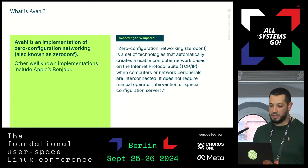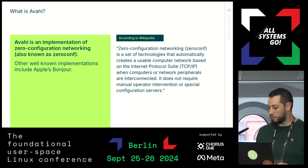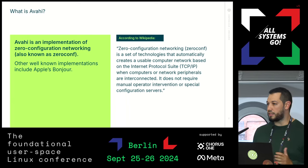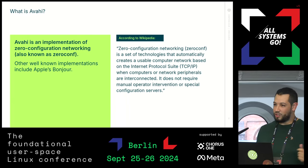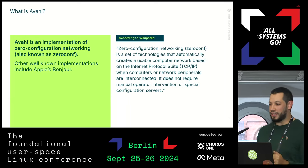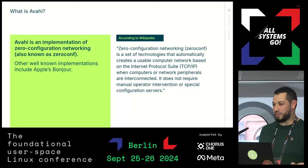It's also implemented in Linux systems. According to Wikipedia, zero-configuration networking is a set of technologies that automatically create a usable computer network based on the Internet Protocol suite when the computers or network peripherals are interconnected. So you just connect your computer to another computer and they just work. When I say computer, this also includes things like network printers.